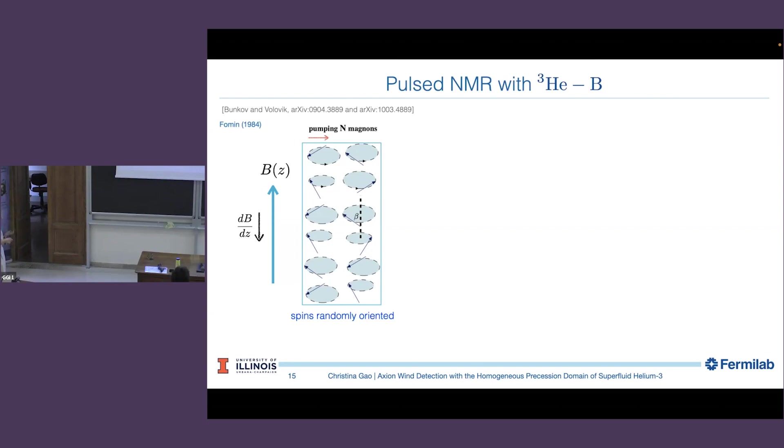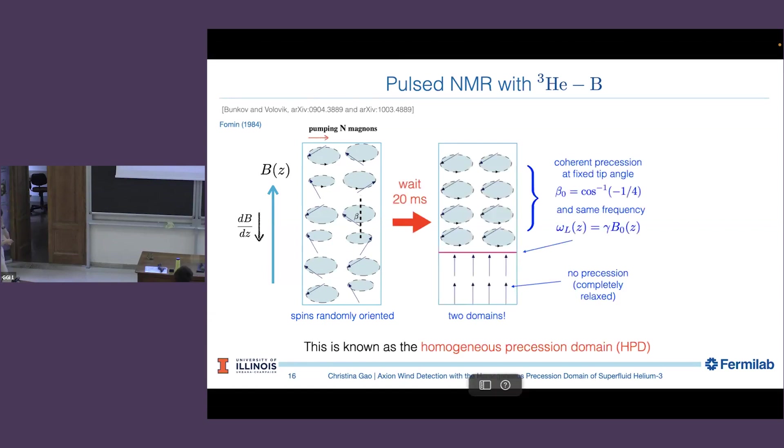Remember the magnon corresponds to the quasi-particle of spin waves. So this is essentially sending N magnons, injecting N magnons into this fluid. T equals zero. They are randomly oriented, but because we're in a superfluid phase, if you wait 20 milliseconds here on this picture, this is what you observe. First of all, it forms two domains. There is this domain down with a little larger magnetic field where all the spins are just in the equilibrium position. And then there is another domain above it where all the spins are precessing at the same frequency along the Z direction at a fixed angle, approximately fixed angle.